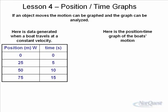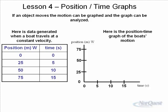Here's a position time graph of the boat's motion. We need an x and a y-axis. On the x-axis, we put time — in this case, the manipulated variable. And on the y-axis, we put the position, which is the responding variable.